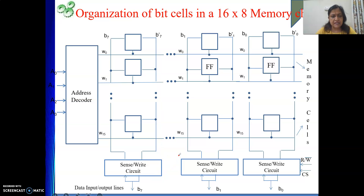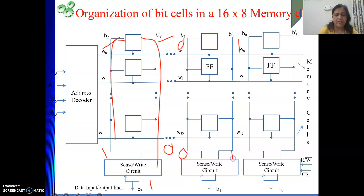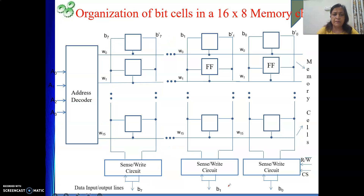The job of the sense-write circuit is to detect the values present on its lines B and B bar. Here it is B7 and B7 bar. If the value on B is 1 and B bar is 0, the sense-write circuit will output 1 on the data lines. If the value is 0 and B bar is 1, it will output 0. This is how the sense-write circuit gives us the output. One cell can store one bit of information.